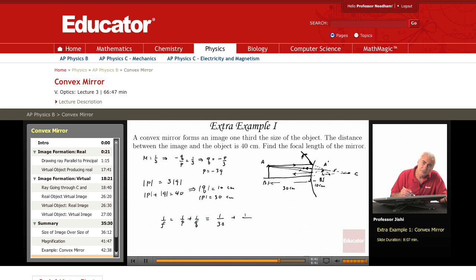Or Q is 10. The distance is 10 centimeters. But since the image is virtual, I should take it as minus 10. So this is equal to 1/30. I get one minus three, so that's minus two over 30. This means that F is minus 15 centimeters.